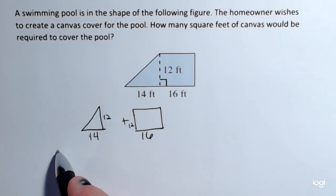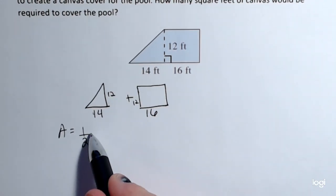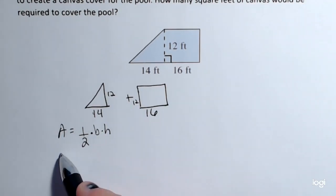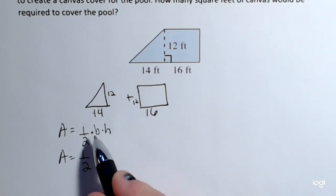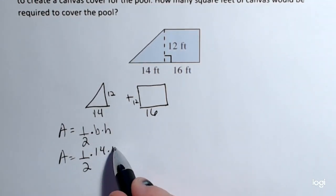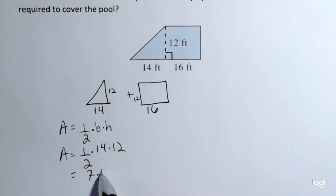The area of a triangle is one half times the base times the height. So plugging in, the base is 14 and the height is 12. And that is 7 times 12, and that'll be 84 feet squared.